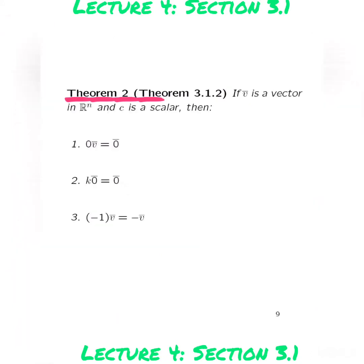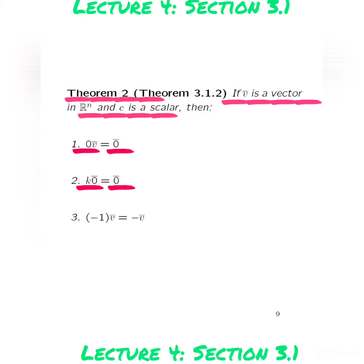Next we have Theorem 2. If V is a vector and C is a scalar, then: 0 times vector V is the zero vector; C times the zero vector is the zero vector; and multiplying vector V by the scalar minus 1 gives the negative of vector V.